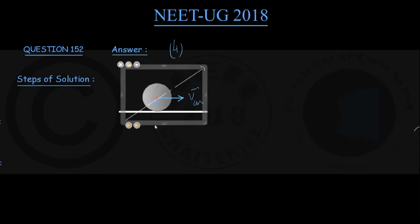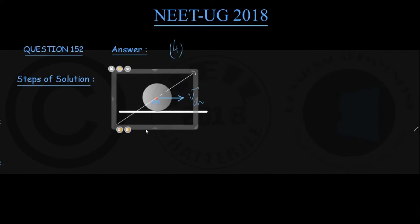The sphere rotates about a horizontal axis passing through the center of mass with a constant angular velocity, say omega.